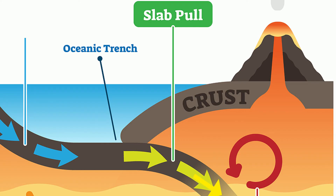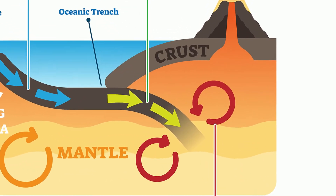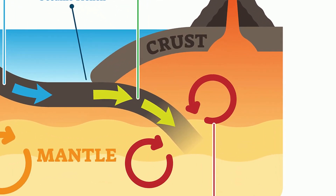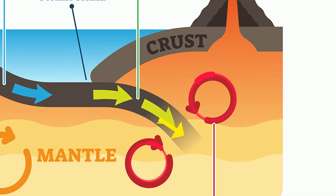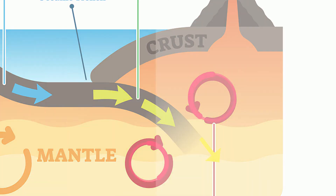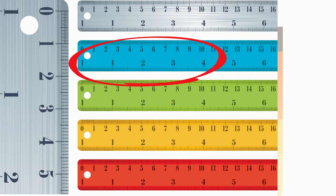Slab suction occurs when a small-scale convection current in the mantle wedge pushes the plate further away from the ridge and back into the mantle. These actions cause the plates to move roughly 10 centimeters a year.